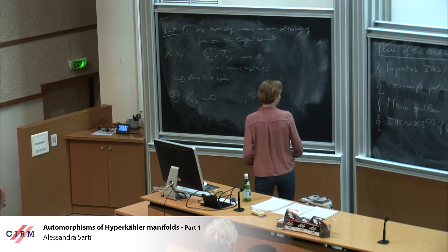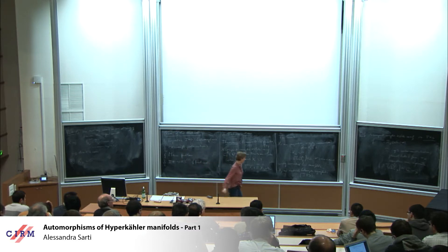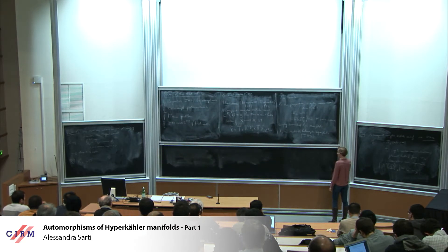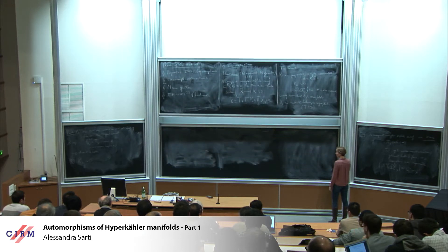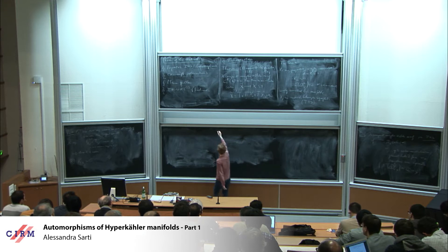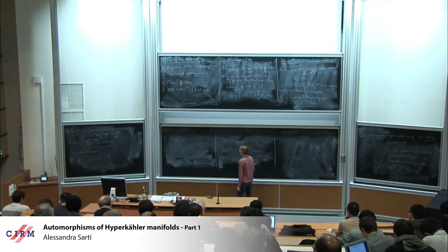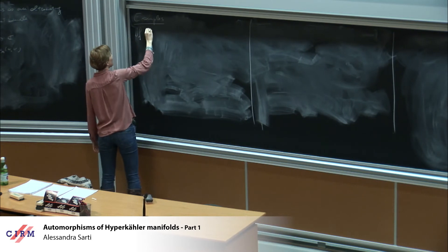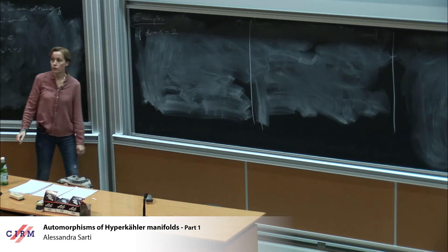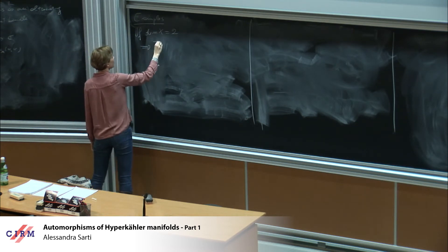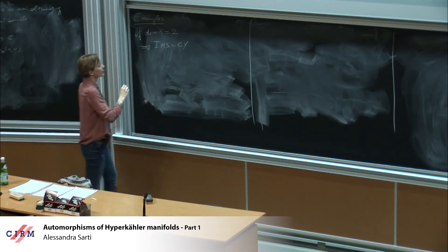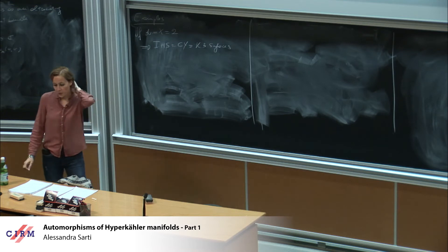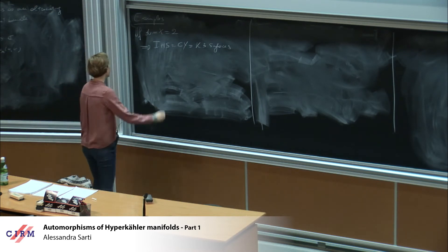Let me give some examples. The most easy examples of IHS that are also Calabi-Yau are K3 surfaces. If the dimension of X equals 2, so we have surfaces, then IHS is the same as Calabi-Yau, and it is the same as K3 surfaces. The Beauville-Bogomolov theorem in the classical surface setting says that if X is a compact, complex, Kähler surface with c_1(X) = 0, then X is either a K3 surface, a torus, or an étale quotient of one of these.